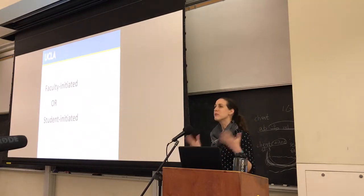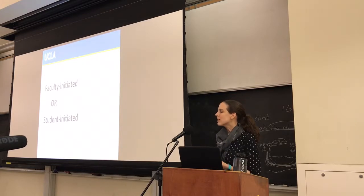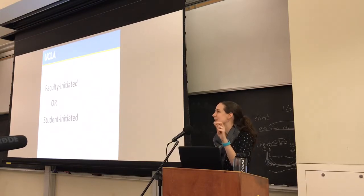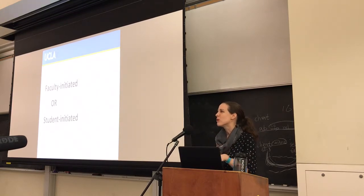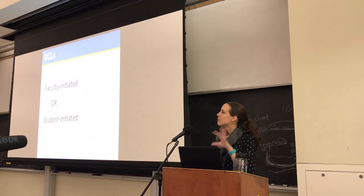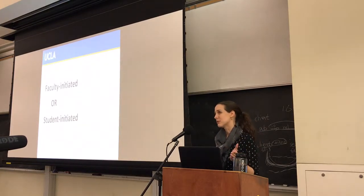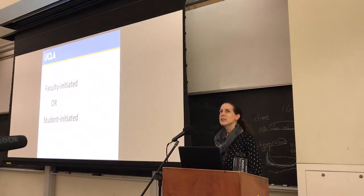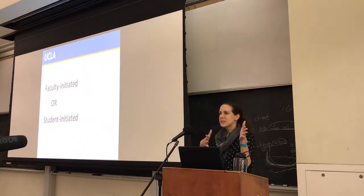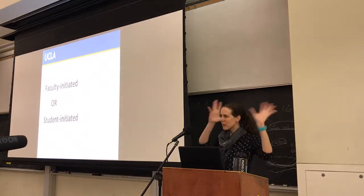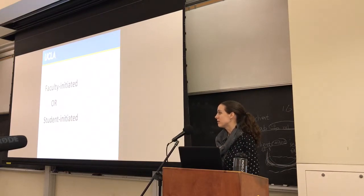Research can take two different forms: it can be faculty-initiated or student-initiated. Faculty-initiated is when a faculty member is working on a research project and you help them — maybe going through literature, helping with experiments, or administering surveys. The flip side is a student-initiated project: you might decide you've always been interested in a particular question, then find a faculty member to help you with that research. So two models: work on a faculty member's research, or create your own research project and find a faculty mentor to help you.